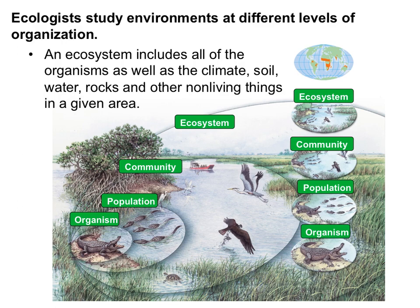The next level is ecosystem, which includes all the organisms of the community as well as abiotic things, which are non-living things — climate, soil, water, rocks, and other things that describe the ecosystem. When we think of an ecosystem, we can also think of things like the water cycle and just the balance that is involved.